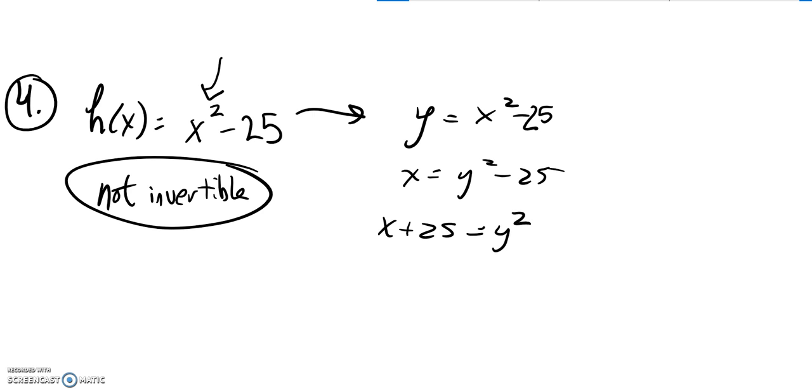Then notice when I go to square root y to get it all alone, if I square root both sides here, when I square root, a plus or minus comes in. So I end up with plus or minus square root of x plus 25 equals y.